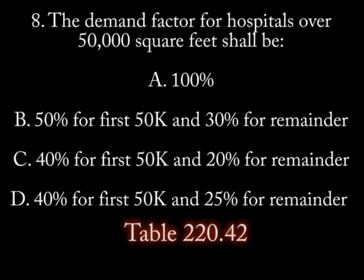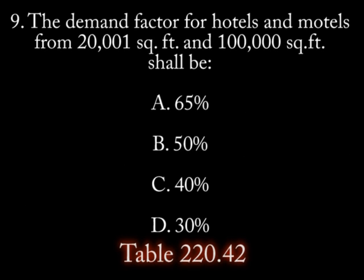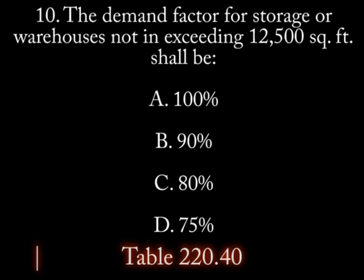Question 8 continued: d) 40 percent for the first 50,000 and 25 percent for the remainder. Question 9: The demand factor for hotels and motels from 20,001 square feet to 100,000 square feet shall be: a) 65 percent, b) 50 percent, c) 40 percent, d) 30 percent. Question 10: The demand factor for storage or warehouses not exceeding 12,500 square feet shall be: a) 100 percent, b) 90 percent, c) 80 percent, d) 75 percent.